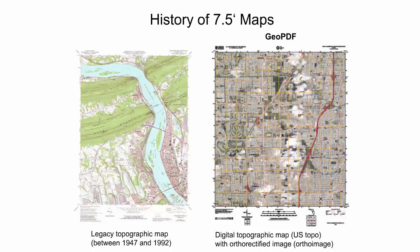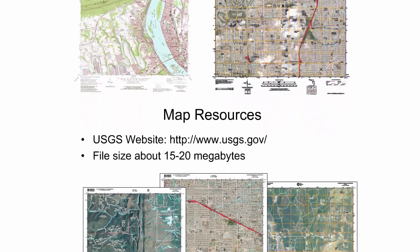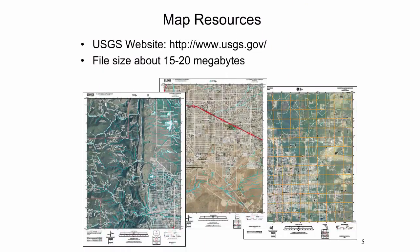This extension provides the end user with a PDF map that is georeferenced. The map comes with multiple data layers that can be turned on and off to support different views of the map. In addition, US Topo maps incorporate an aerial image, referred to as an ortho image. US Topo maps can be freely downloaded in PDF format from the USGS store, accessible through the USGS website. The file size for each US Topo quadrangle is about 15 to 20 megabytes, and the US Topo program will provide coverage on a three-year production cycle.